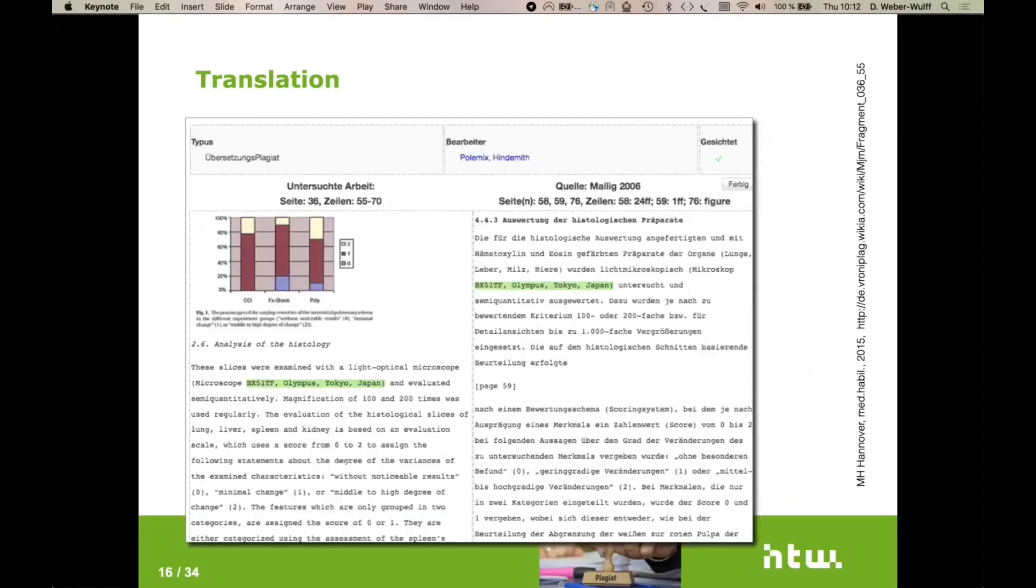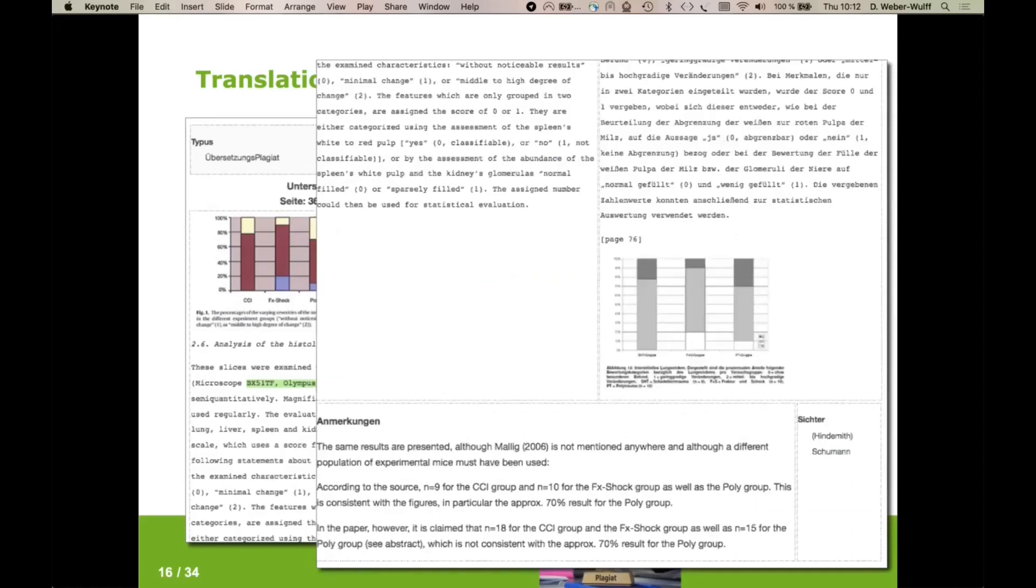I have another example here where a doctoral dissertation on the right-hand side in German was translated by the doctoral advisor into English for his habilitation. The only thing that we see the same here is the name of the microscope and where it was used. But if you look very closely, you can see that the images and the data appear to be the same. Although if you look very closely at the dissertation and the habilitation, the number of mice being used has suddenly changed. It's gotten to be more. And this is rather strange if the exact same results are coming up.